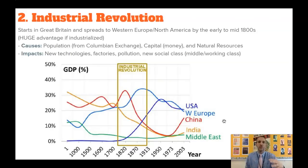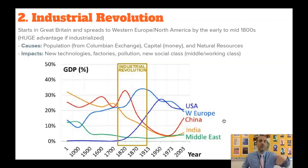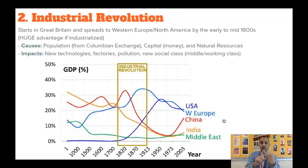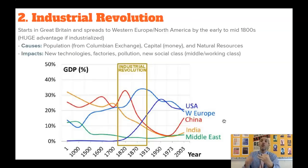The second major topic is the Industrial Revolution. It starts in Great Britain and spreads to Western Europe and North America by the mid-1800s. If you are industrialized, you have a tremendously large advantage over everyone else moving forward — all the way through today. The causes require three things: people to work in factories, capital or money, and natural resources. Britain's population increased from the Columbian Exchange, money flowed in from the age of exploration, and Britain is loaded with coal and iron deposits — making it ripe to industrialize.